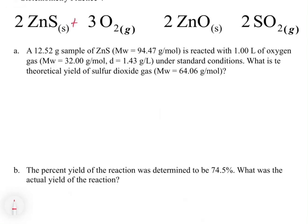The last stoichiometry practice problem involves: 2 ZnS + 3 O2 → 2 ZnO + 2 SO2 gas. The problem states: a 12.52-gram sample of zinc sulfide is reacted with 1 liter of oxygen gas under standard conditions. What is the theoretical yield of sulfur dioxide gas? The molecular weight of ZnS is 64.06 grams per mole. Reading this problem: we have two reactants, zinc sulfide and oxygen, and we get information about both — a mass for zinc sulfide and a volume for oxygen. This is a limiting reagent problem.